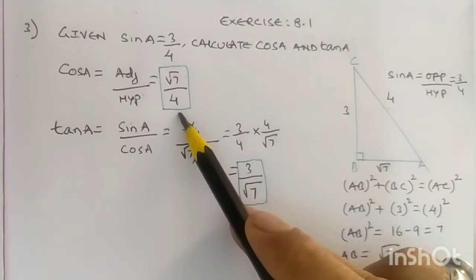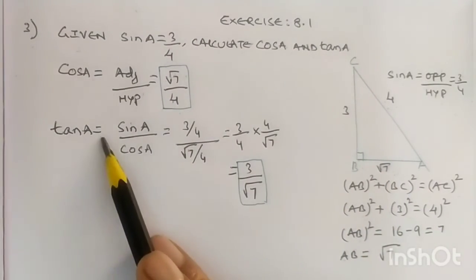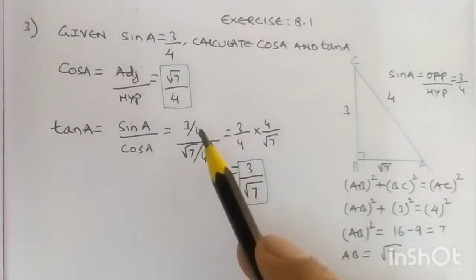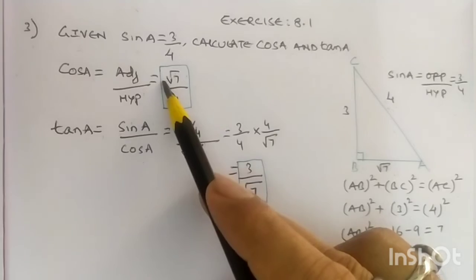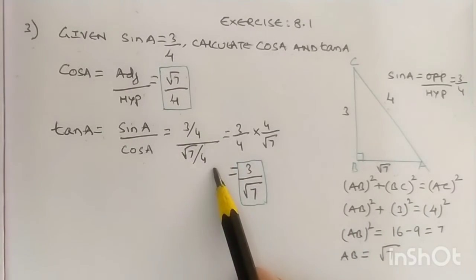Now tan A. We know that tan A equals sin A upon cos A. Sin A is 3 upon 4, and cos A we have calculated as root 7 upon 4. So that is 3 upon 4 divided by root 7 upon 4, which equals 3 upon 4 into 4 upon root 7.